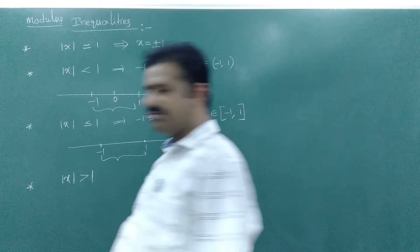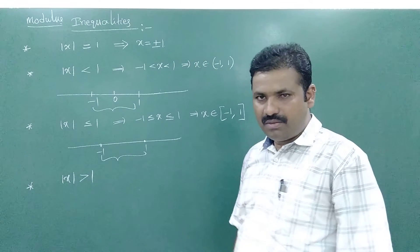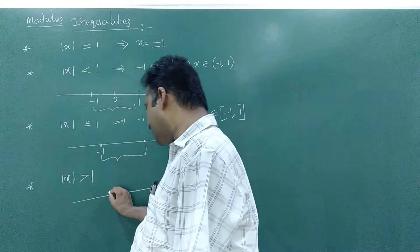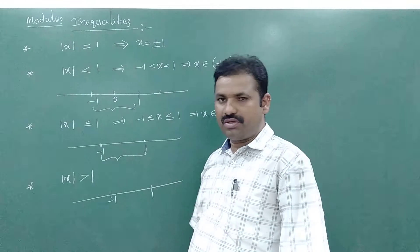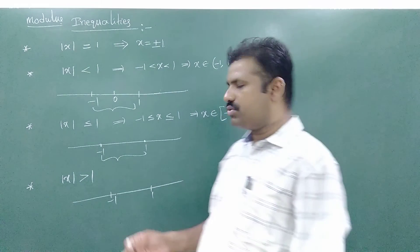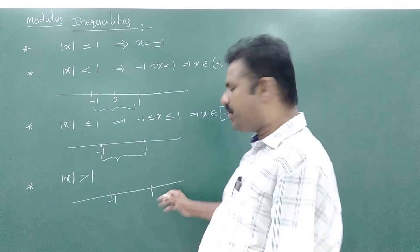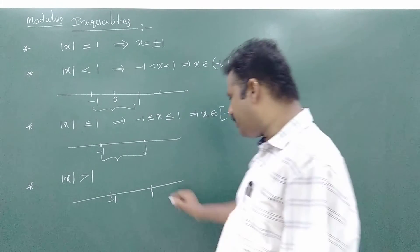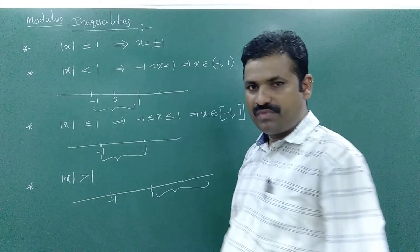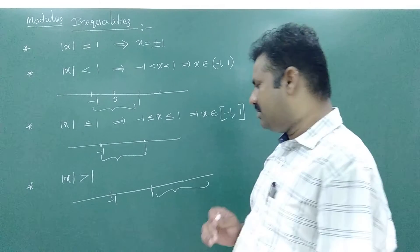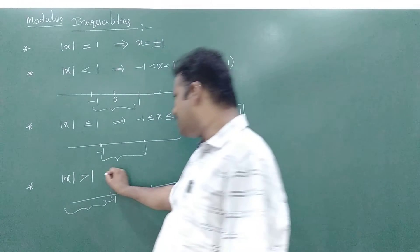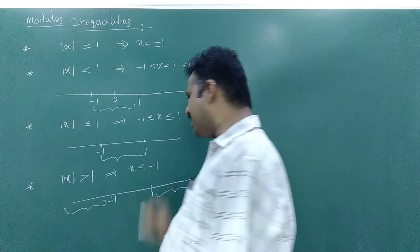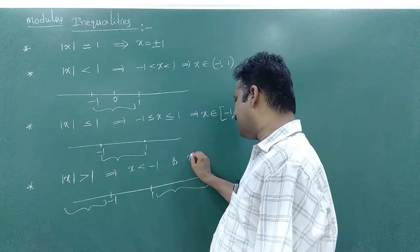Now what about mod x greater than 1? What are the numbers satisfying this? When mod x equals 1, we have minus 1 and 1. Take 0: mod 0 is 0, which is not greater than 1 — not possible. Take 2: mod 2 is 2, greater than 1 — possible. Take 1.5: mod of 1.5 is 1.5, greater than 1 — possible. What about mod of minus 2? That is 2, which is greater than 1 — also possible. So these numbers satisfy this, meaning x less than minus 1 or x greater than 1.